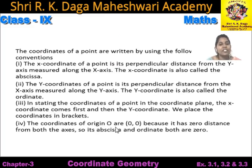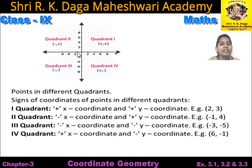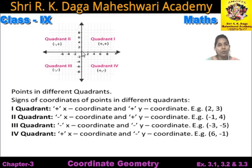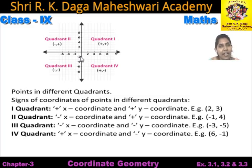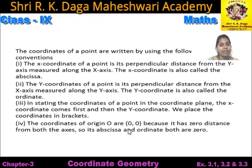The coordinates of origin O are (0, 0) because it has 0 distance from both the axes, so its abscissa and ordinate both are 0. Jahan pe hum x-axis aur y-axis ka intersection point dekhte hain, jo ki origin kehlataa hai, isme dono coordinates ki value 0 hoti hai. Abscissa and ordinate both are 0 because the perpendicular distance from x-axis and y-axis both are 0. Origin ke jo coordinates hote hain, woh 0, 0 hote hain.